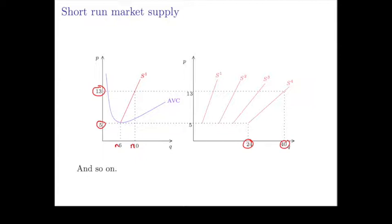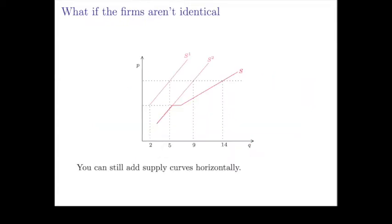What do you do if these firms are not identical? So let's suppose you had two firms that had supply curves S1 and S2. Well, any price lower than this, firm 1 is not going to supply anything. Only firm 2 is going to supply.